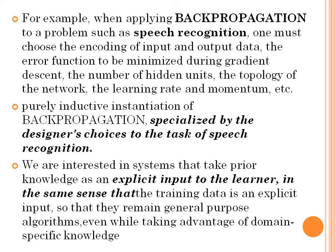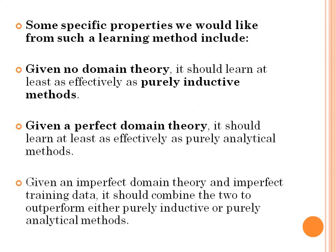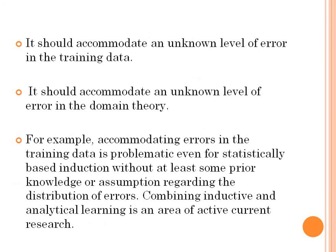We want to take the advantages of both methods and cover the weaknesses of both, which is why we go for a combination. Specific properties we would like from such a learning method include: if no domain data is given, it should learn at least as effectively as a purely inductive method; if perfect domain theory is given, it should perform as a purely analytical method; if both domain data and training data are imperfect, it should combine the two. It should also accommodate unknown levels of error in the training data and in the domain data.